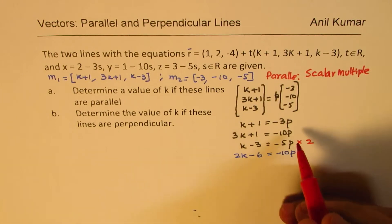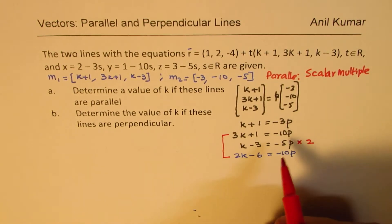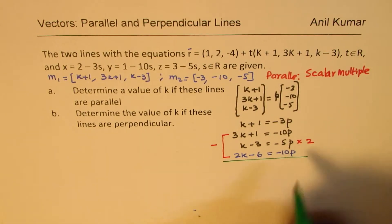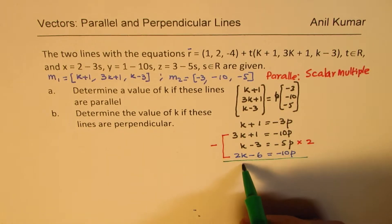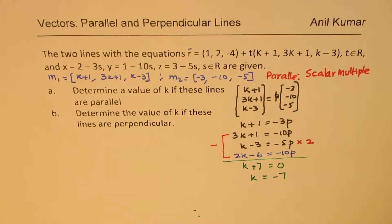So now we're going to use these two equations and eliminate p by subtracting. When you subtract, 3k minus 2k is k, 1 minus negative 6 gives us plus 7, and the p terms cancel to 0. So that gives you k = -7. Is that clear?